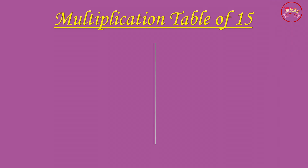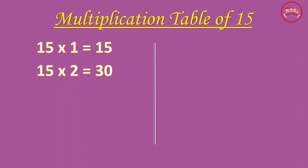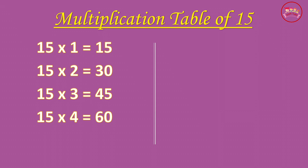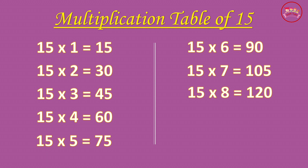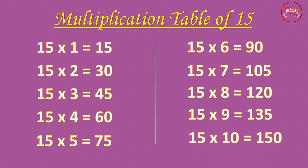Multiplication Table of 15. 15-1 is 15, 15-2 is 30, 15-3 is 45, 15-4 is 60, 15-5 is 75, 15-6 is 90, 15-7 is 105, 15-8 is 120, 15-9 is 135, 15-10 is 150.